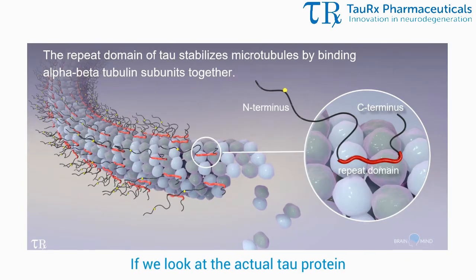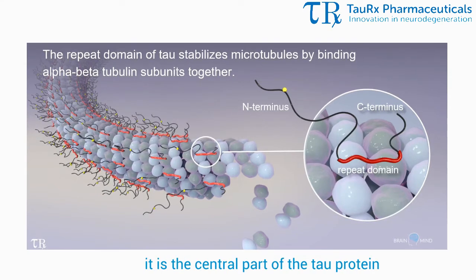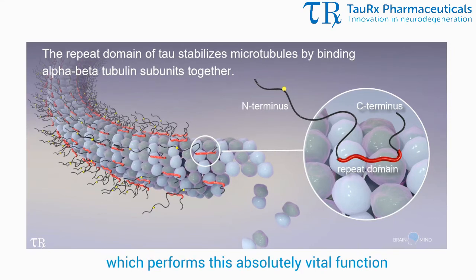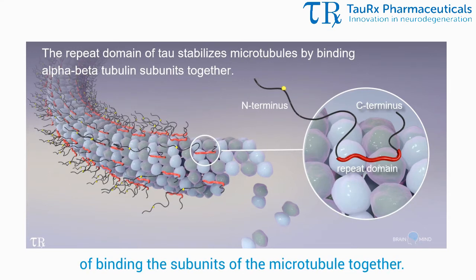If we look at the actual tau protein, it is the central part of the tau protein, which is called the repeat domain, which performs this absolutely vital function of binding subunits of the microtubule together.